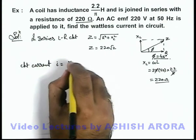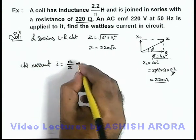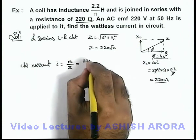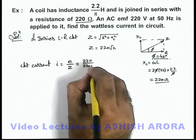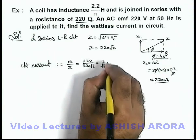Circuit current we can write as emf by Z, so the value here will be 220 divided by 220 root 2. This will be 1 by root 2 ampere.